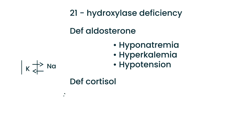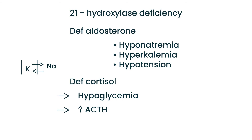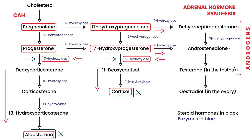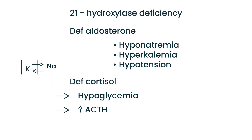If you are deficient in cortisol, the patient will have hypoglycemia, and due to a lack of negative feedback, the patient will have increased ACTH. All the precursors will be in excess and shunted to produce androgens, so you will have an excess of androgens.